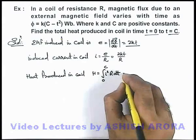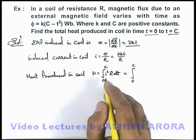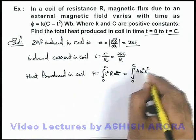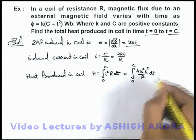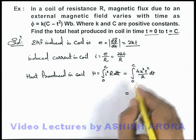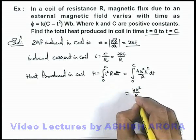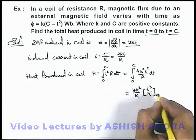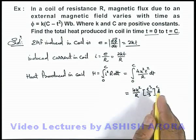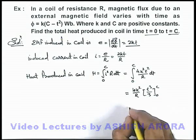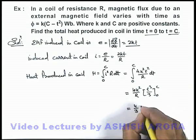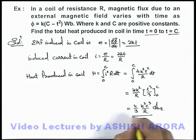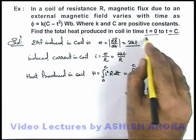On substituting the value of current, we get ∫4k²t²/R dt. On integrating, we are getting 4k²/R as a constant, and integration of t² will be t³/3 within limits from zero to C. On substituting the value of the upper limit, as the lower limit will be zero, the result we are getting is 4k²C³/3R. That will be the answer to this problem—the total heat produced in the duration from zero to C.